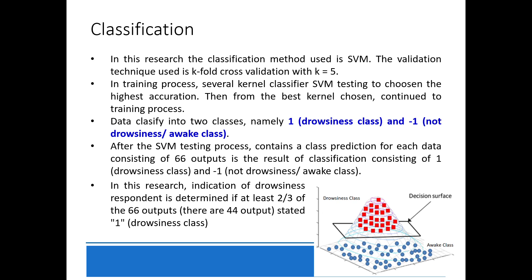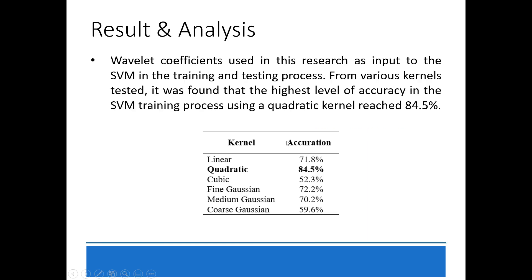After the SVM testing process, a class prediction is obtained for each data, consisting of 66 outputs of class 1 or negative 1. In this research, a respondent is indicated as drowsy if at least 2 out of 3 of the 66 outputs — that is, if there are 44 or more outputs equal to 1 — it means the drowsy class. The wavelet coefficients are used as input to SVM in the training and testing process. From various kernel tests, the highest accuracy was found using the quadratic kernel, reaching about 84.5%.